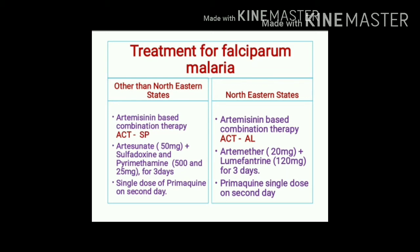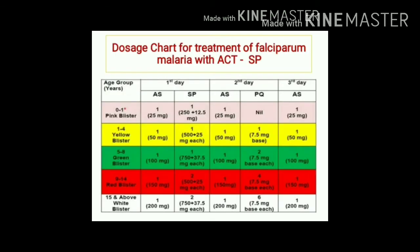For states other than northeastern states: artesunate twice daily for three days combined with sulfadoxine-pyrimethamine on day one, plus a single dose of primaquine on day two (ACTSP). For northeastern states — where resistance to sulfadoxine-pyrimethamine has developed — artemether-lumefantrine fixed-dose combination is used for three days, with a single dose of primaquine on day two. All drugs are given orally.